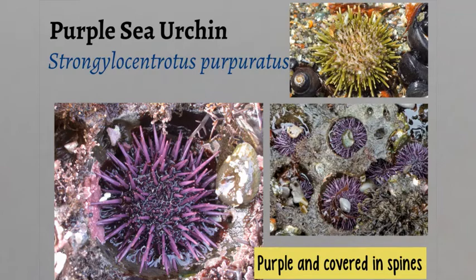Case in point: if you look at the photo on the top right-hand corner, that is actually a purple sea urchin. But when they are in their juvenile stages, they actually are green in color.